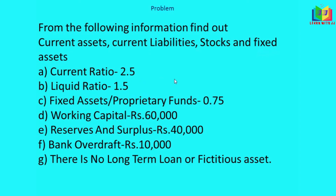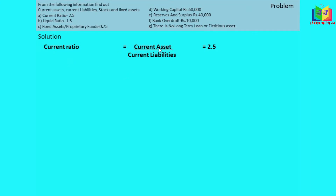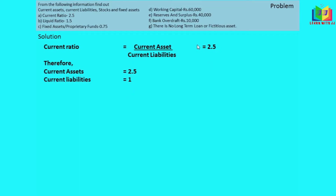Now, the problem is how to calculate the fixed asset. First, using current ratio: current assets divided by current liabilities. Current ratio is 2.5, so current assets is 2.5 and current liability is 1.